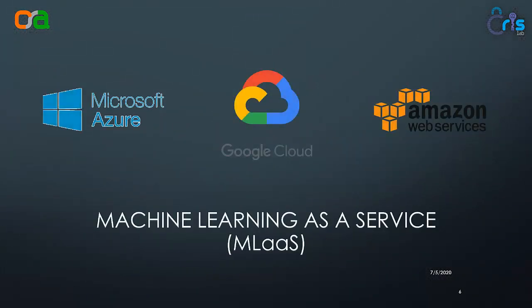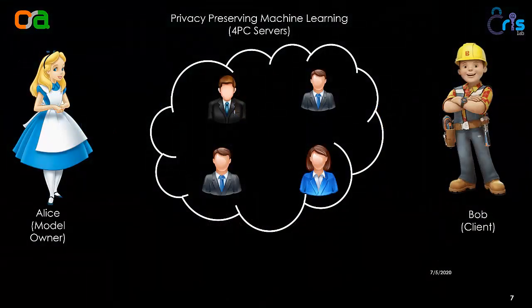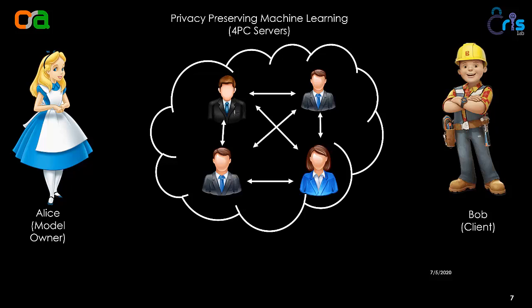Now I'll digress a little and talk about what machine learning as a service is. Nowadays, giant tech companies like Microsoft, Google, and Amazon provide servers on the cloud which can be used by small labs or companies for machine learning purposes like training, prediction, and other things. Combining this service with MPC gives us the area known as privacy preserving machine learning. Specifically in our setting, we look at four servers in the cloud which interact with each other, forming our MPC. Because we are in the honest majority setting, we can allow only one of the four servers to be corrupt.